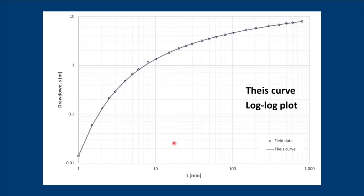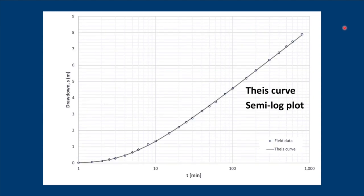In a previous video we talked about the Theis method, where we plot drawdown along the y-axis and time along the x-axis, all on log-log paper, and then we plot our Theis curve through the data. Now if we take this same data and plot it on semi-log paper, where drawdown is on the normal scale and time is still on the log scale, you'll notice that the early data points start to curve slowly towards what appears to be a straight line.